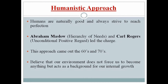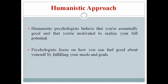The humanistic approach holds that humans are naturally good and always try to reach perfection. Abraham Maslow's hierarchy of needs and Carl Rogers' unconditional positive regard led this movement, which emerged in the 1960s and 70s. Humanistic psychologists believe that our environment does not force us to become anything, but acts as a background for our internal growth. They believe you are essentially good and motivated to realize your full potential, focusing on how you can feel good about yourself by fulfilling your needs and goals.